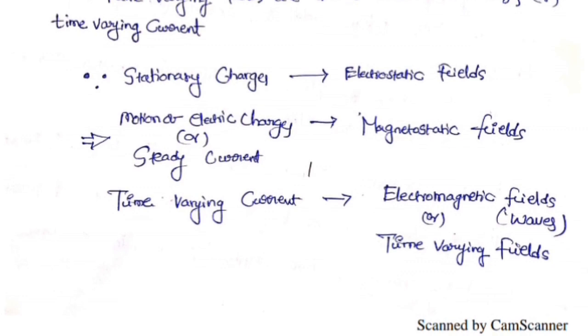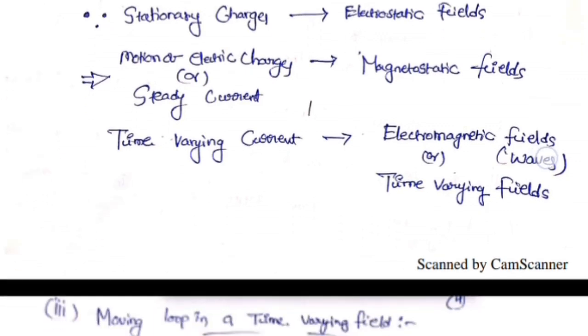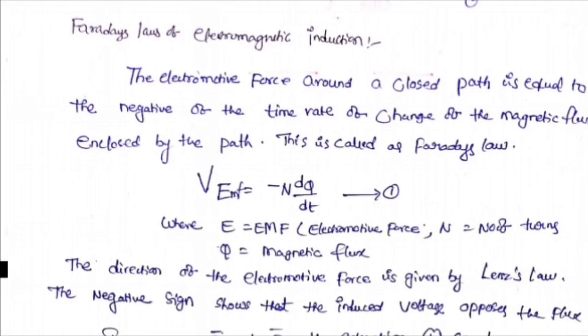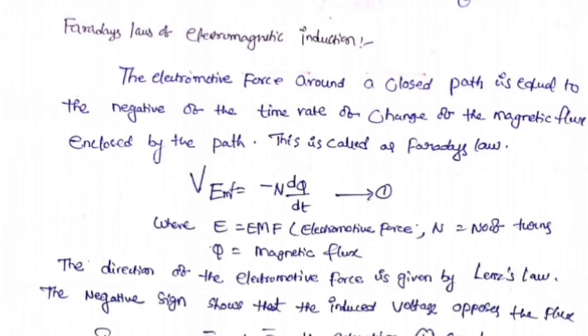Time varying current produces electromagnetic fields, that is time varying fields. Time varying magnetic fields will be produced by time varying current. Faraday's law states that whenever a conductor is moved in a magnetic field, an EMF will be induced. That is also the principle of a generator.